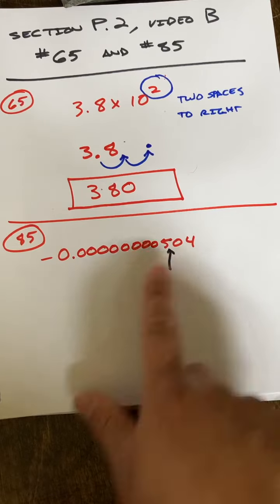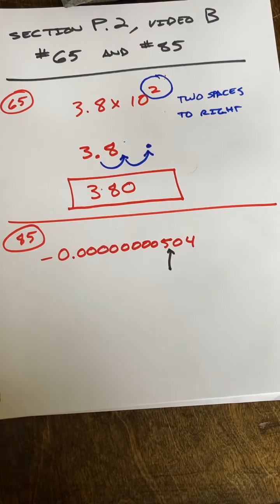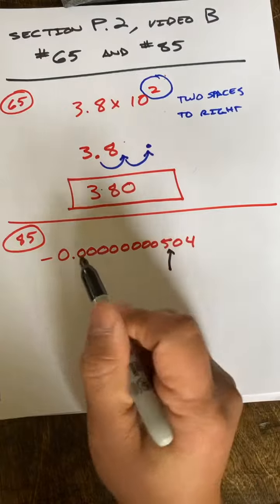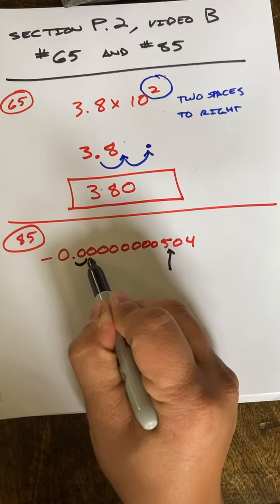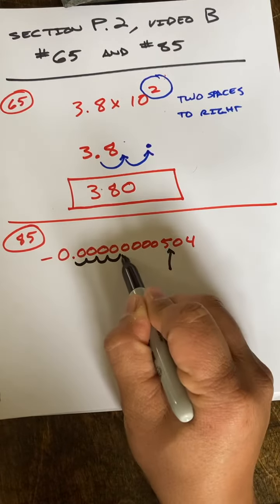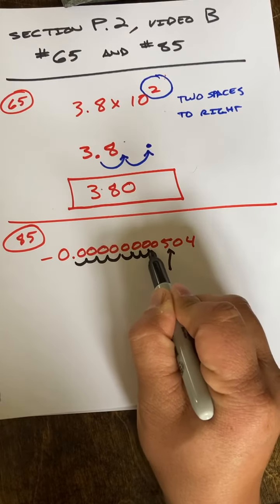Between the five and the zero. Okay, and to do that I have to move the decimal point one, two, three, four, five, six, seven, eight...